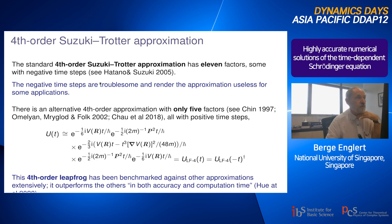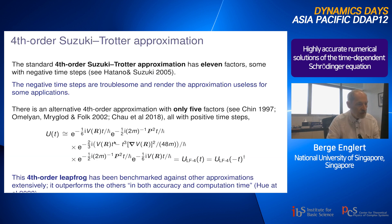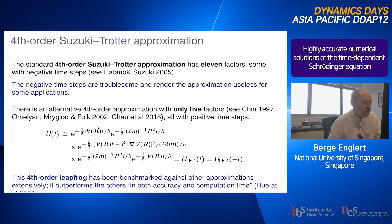There is an alternative: a fourth-order approximation with only five factors and all positive time steps. There's some history — a paper by Chin in 1997, a paper by Omelyan, Mryglod, and Folk in 2002, and our own work from 2018, with different approaches arriving at the same answer. The structure is: potential energy at 1/6, kinetic energy at 1/2, potential energy at 2/3, kinetic energy at 1/2, potential energy at 1/6, plus an extra term that goes not with the potential energy but with the square of the force derived from the potential energy.